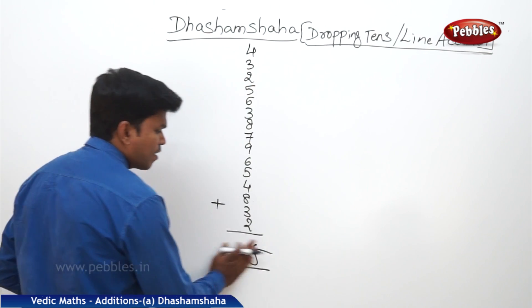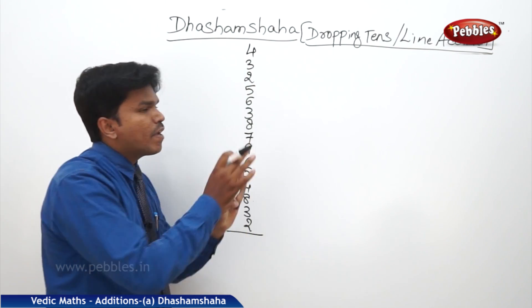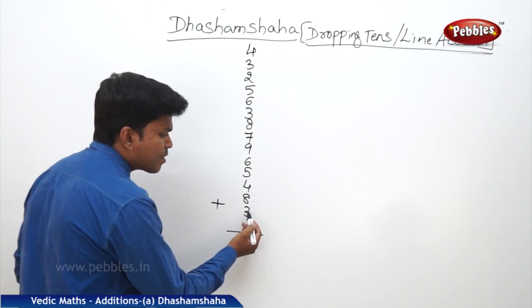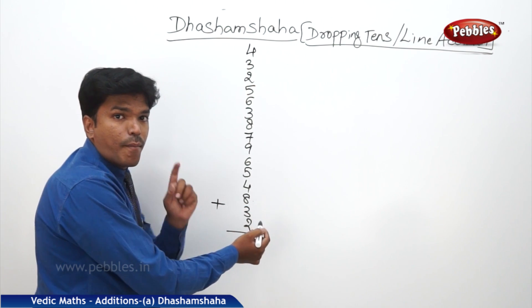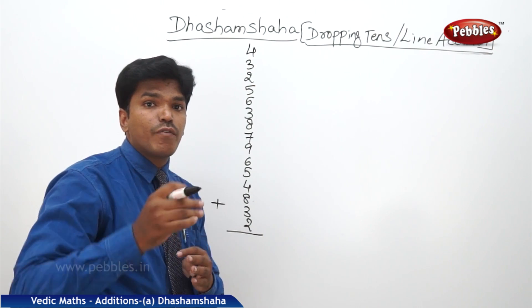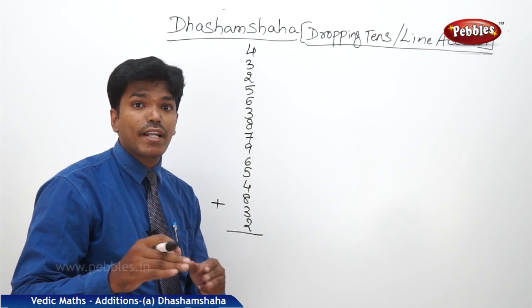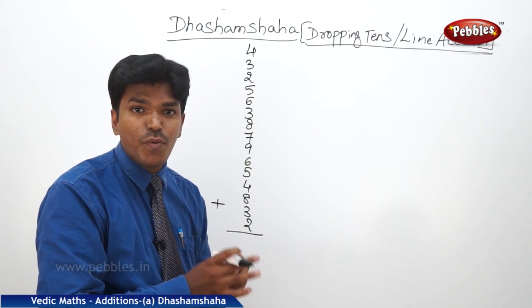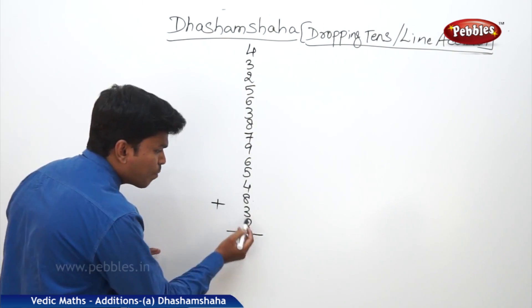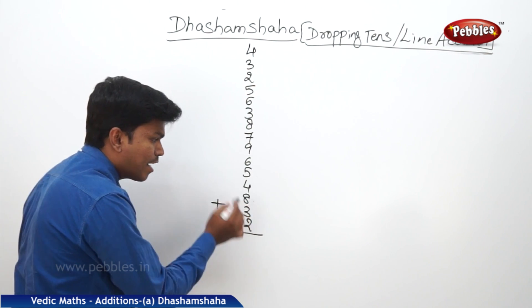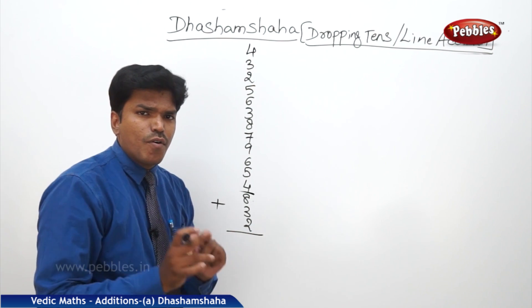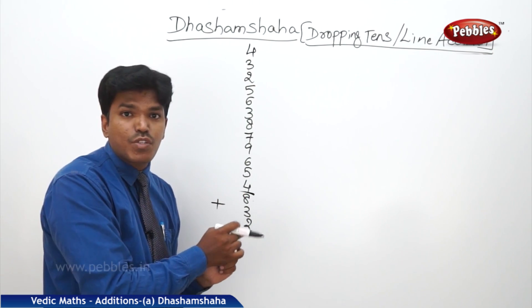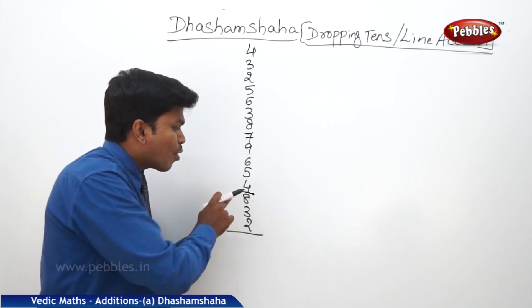Now see here. Generally we start counting from top to bottom, but here we are going to start from bottom to top. What is 2 plus 3? 5. What is 5 plus 8? 13. Whenever you are getting the sum 10 or more than 10 when you are adding, you need to drop a 10 there. I am putting one bar on that number to show that I have dropped a 10 here.